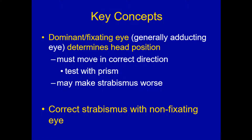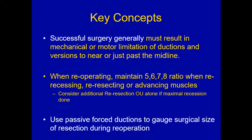Quantitate the posture at distance and near using a small accommodative target and a goniometer. Determine the ETI and XTI if it's a horizontal posture, and determine if strabismus is present. Record all this data in a stepwise fashion to plan properly. Remember that the dominant eye — the fixing eye, usually the adducting eye — determines the head position, so you must move that in the correct direction. You can test this in advance with a prism over the dominant eye to see if the head posture improves. You cannot correct head posture by working on the non-dominant eye, and you may make the strabismus worse. Then you correct the strabismus with the non-fixing eye.